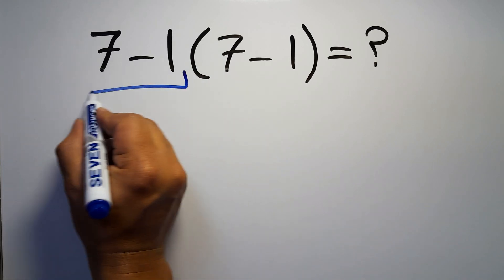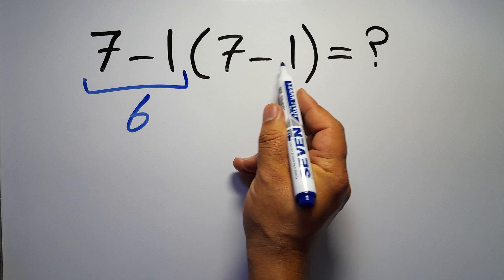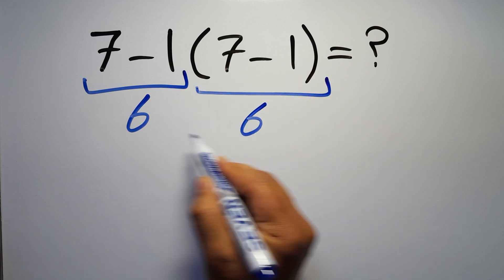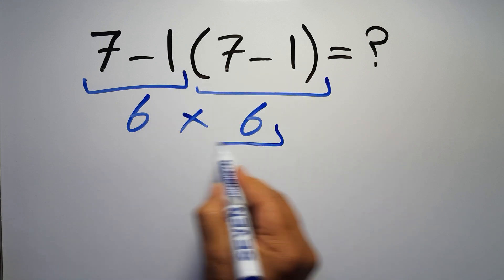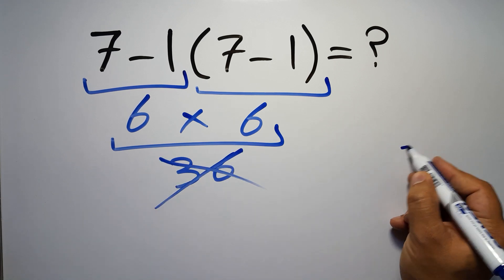7 minus 1 gives us 6, and again here inside these parentheses we have 7 minus 1, so 6 times 6 which equals 36. But this answer is not correct because according to the rule of operations, first we have to do parentheses, then exponents, then multiplication or division, and finally addition or subtraction.